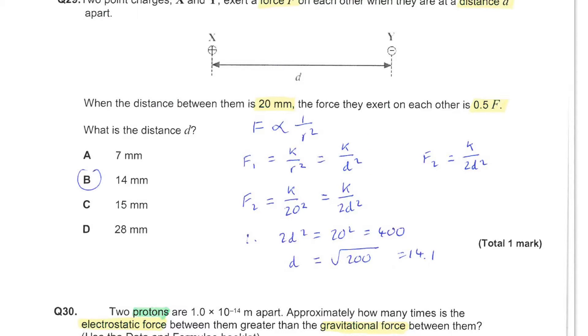Now I also know that the force in the second situation is half of the original. So F2 is F1 divided by 2, which leads to K divided by 2D squared.